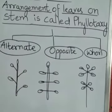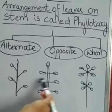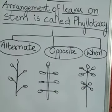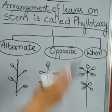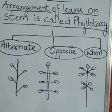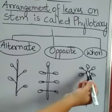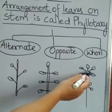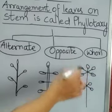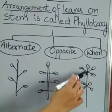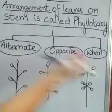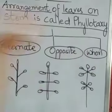In whorled phyllotaxy, 'whorl' means a pattern of concentric circles. Here, two or more than two leaves are arranged at a single node and they form a pattern of a circle. So there are three types of phyllotaxy: alternate, opposite, and whorled.